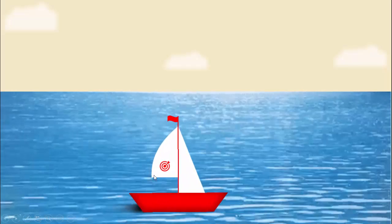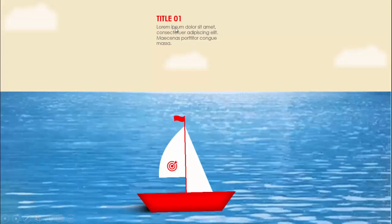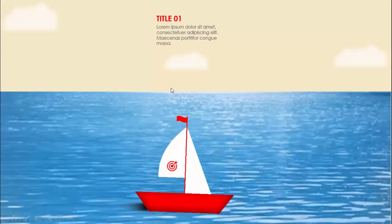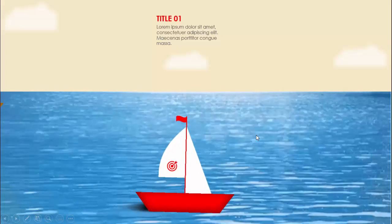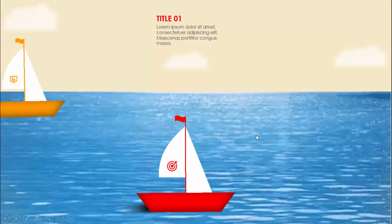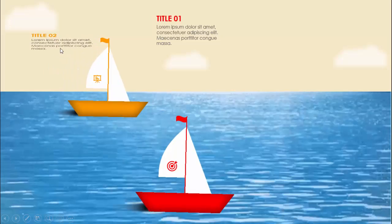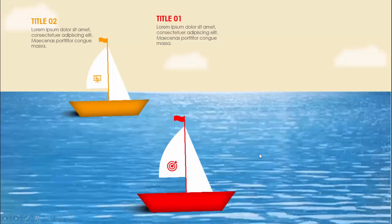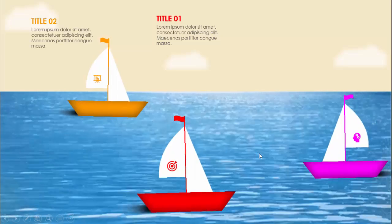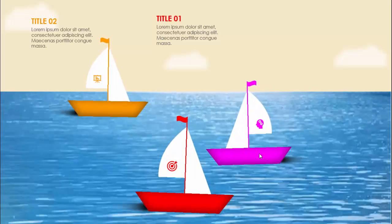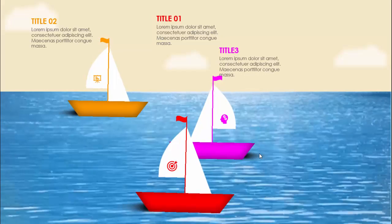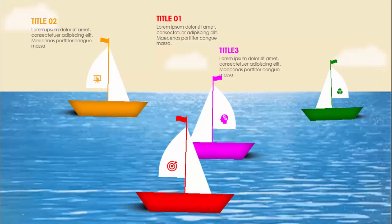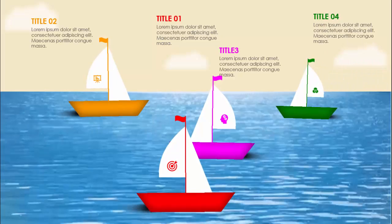I have added an icon here and you can add your title and detail text or any other text you want — you can replace it. When I click the second boat comes and stops, revealing option two or title two. On my next click, option three comes from the right side, and then on my next click the last option comes. You can add as many boats as you want depending on your requirement.